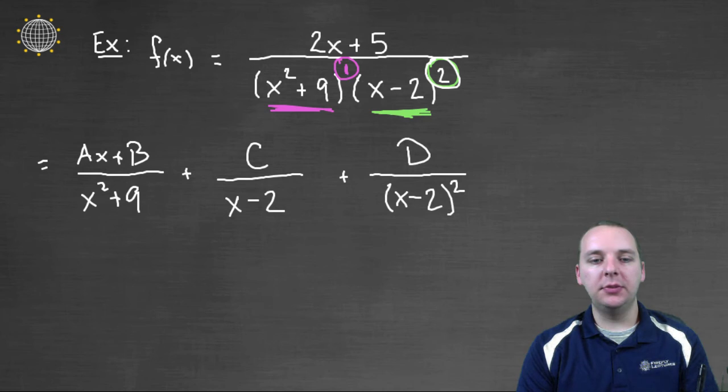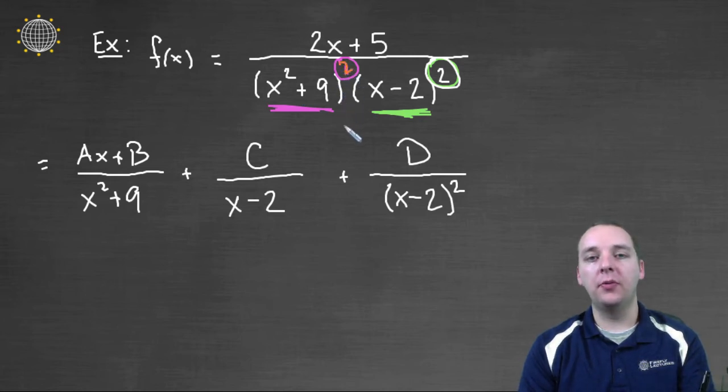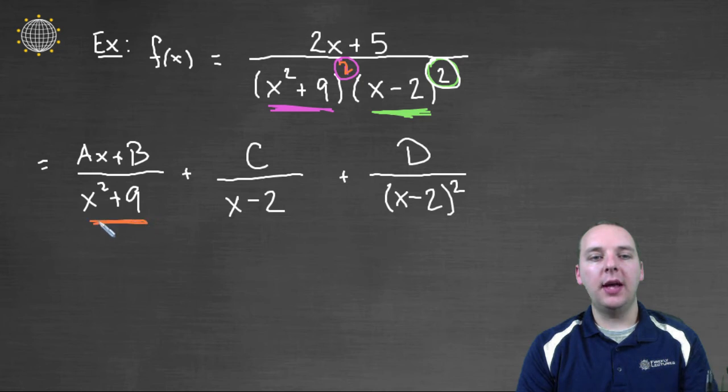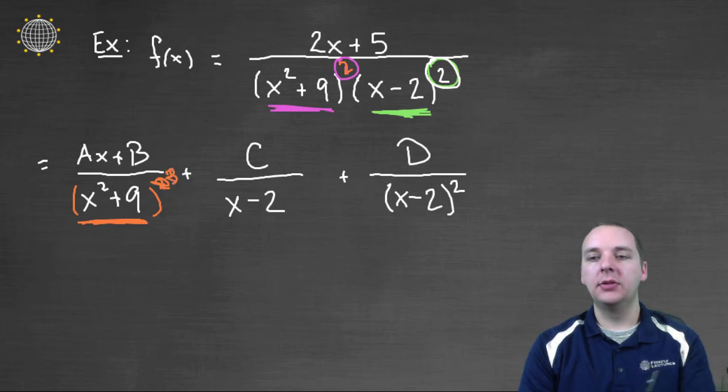One last thing I'll mention before I let you go. What if this was not x squared plus nine to the first power? What if it was to like the second power or third power or fourth power or something? Well, then you would have more terms like this, where the first term would be x squared plus nine, but the second term would be x squared plus nine squared, and then the next term would be to the third power, so on and so forth. You'd have a number of terms here.